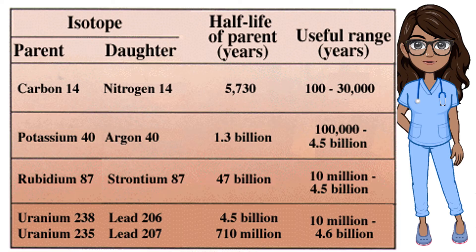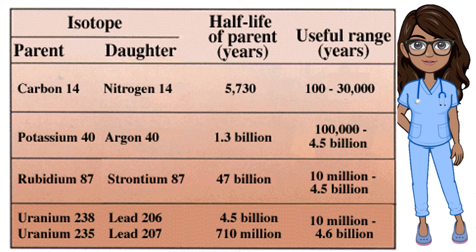Here are common isotopes used in radiometric dating. Carbon-14 is the parent isotope, while its daughter isotope is nitrogen-14. Potassium-40 produces a daughter material of argon-40. Rubidium-87 produces strontium-87. Uranium-238 and uranium-235 produce lead-206 and lead-207 respectively. This table also shows the half-life of parent isotopes — for example, carbon-14 has a half-life of 5,730 years, with a useful range of 100 to 30,000 years.